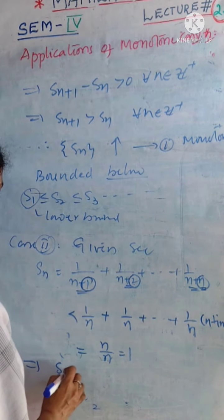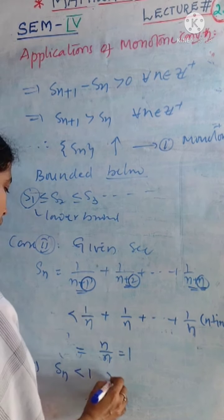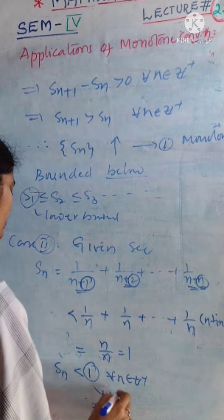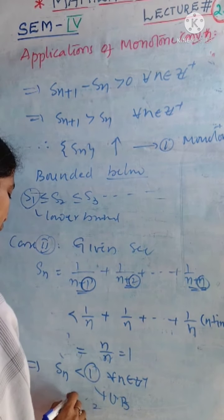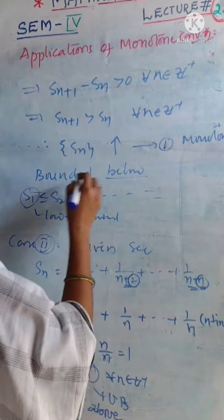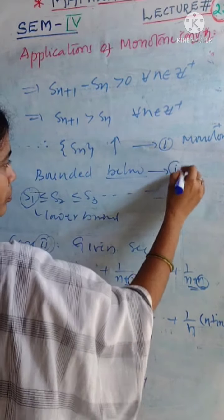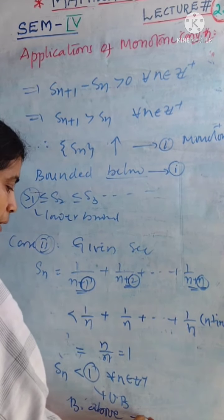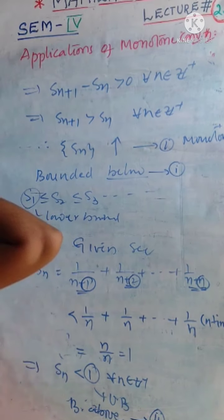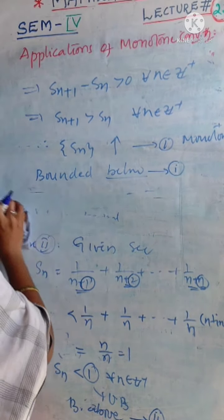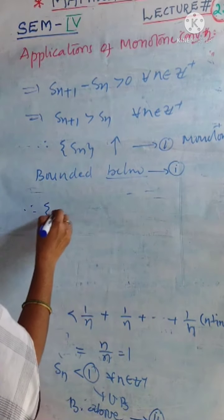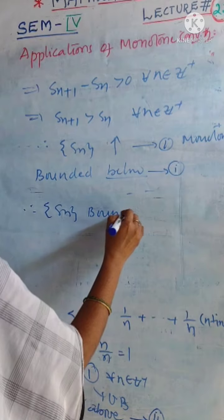By transitivity, our Sn is now less than 1. This being true for every n means 1 is the upper bound, bounded above. Our sequence is bounded below as well as bounded above. Therefore, Sn is a bounded sequence.